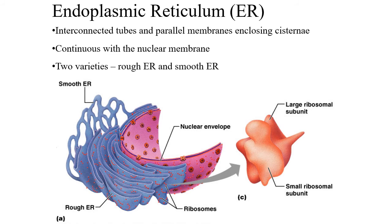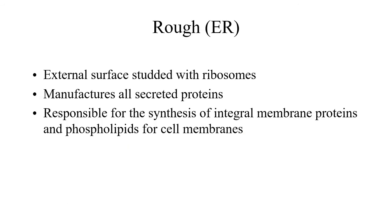Endoplasmic reticulum comes in two kinds: smooth and rough. Rough endoplasmic reticulum is studded with ribosomes, making it appear rough, and its job is protein synthesis. The ribosomes make the proteins, and the rough ER packages them — all secreted proteins that will leave the cell are packaged here and directed toward the cell edge for potential release. Integral membrane proteins are incorporated directly into the cell membrane. Rough ER also produces the phospholipids for the bilayer.